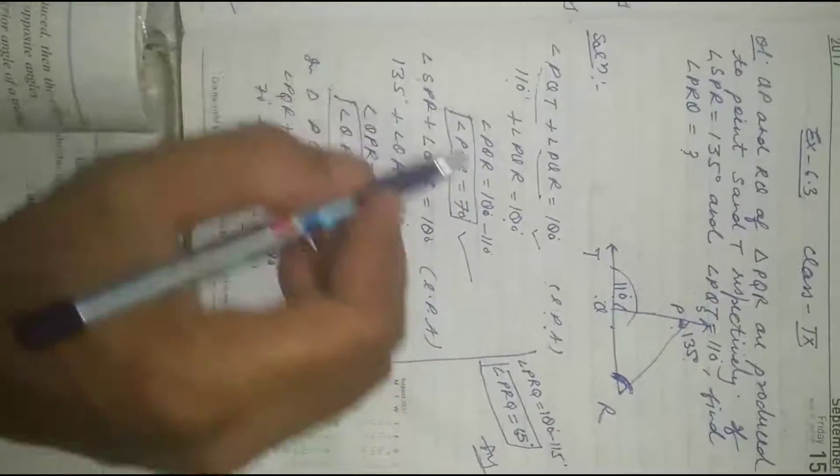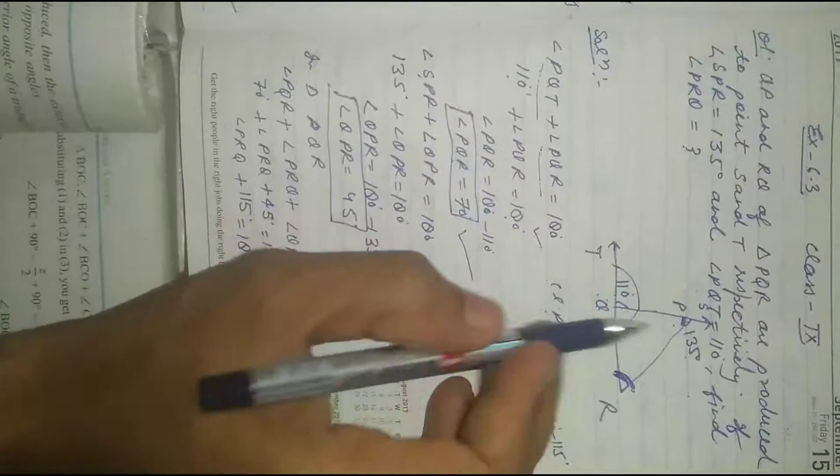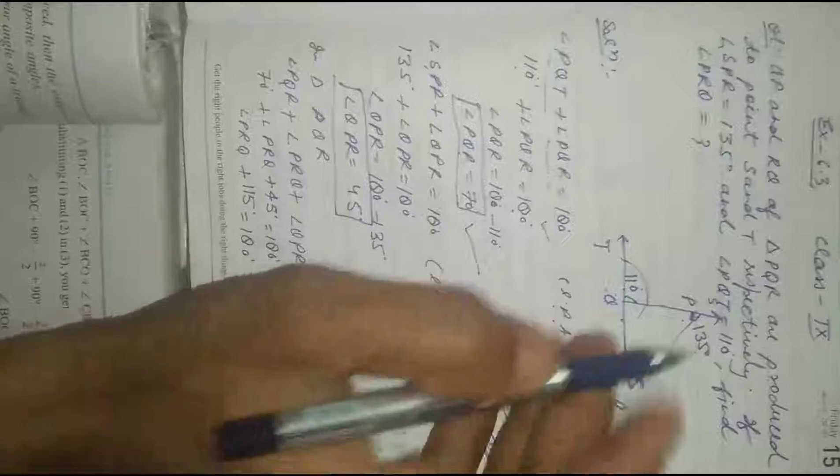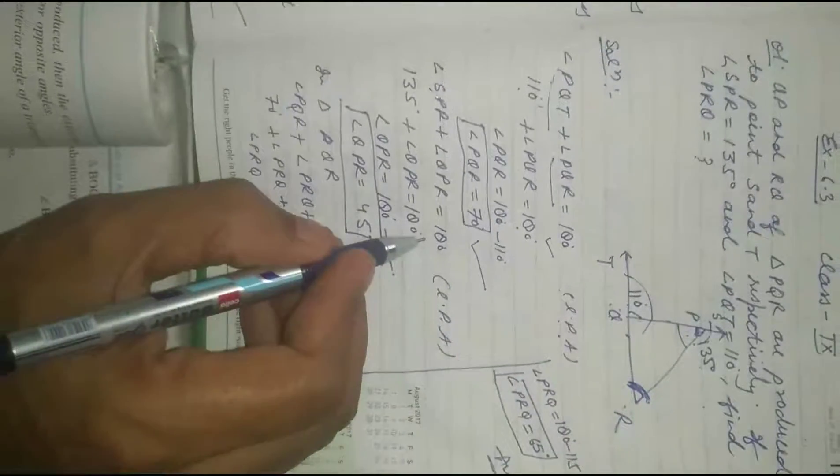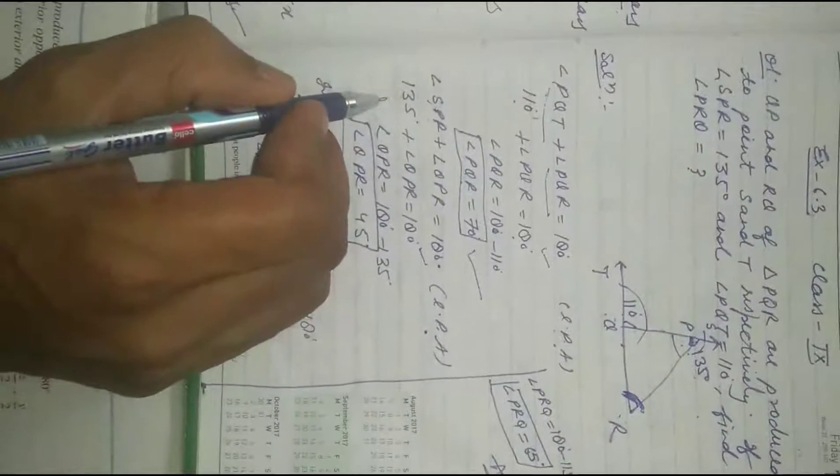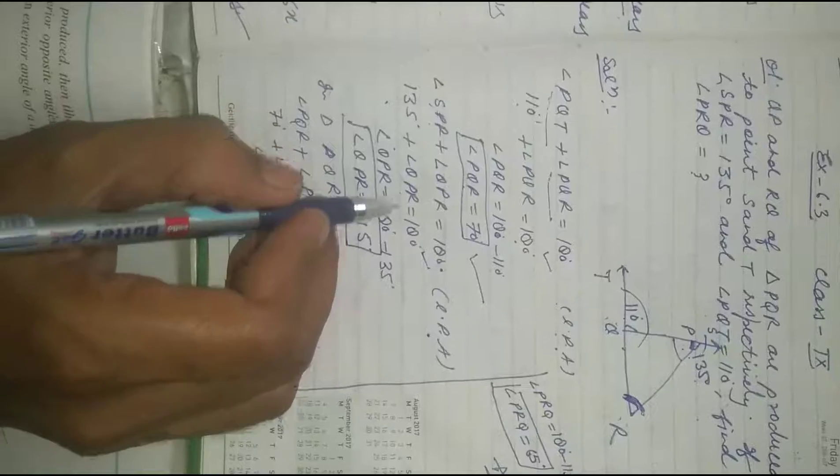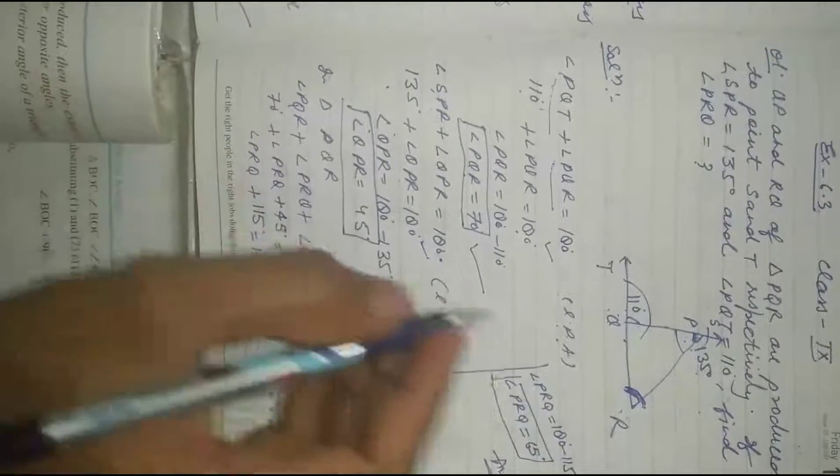Again, angle SPR plus angle QPR equals 180 degrees. Why? Both angles are linear pair. So SPR is 135 plus angle QPR equals 180 degrees, therefore angle QPR equals 45 degrees.